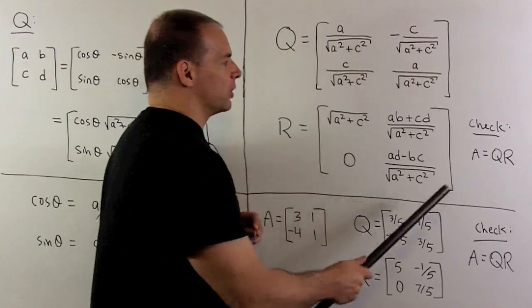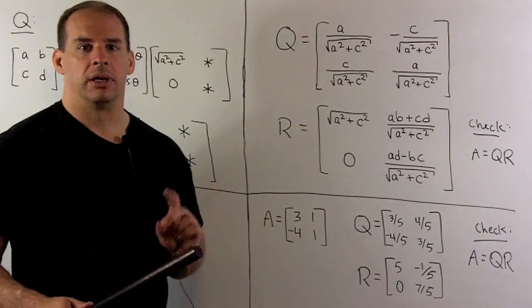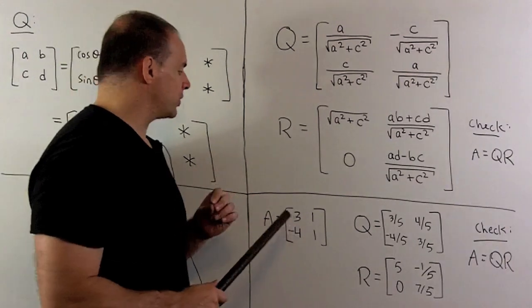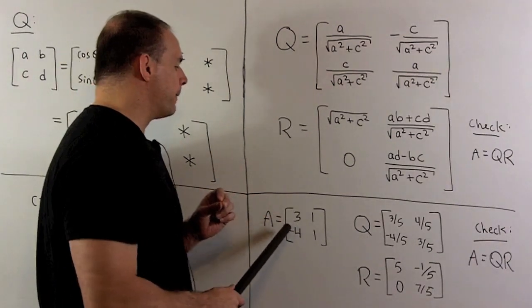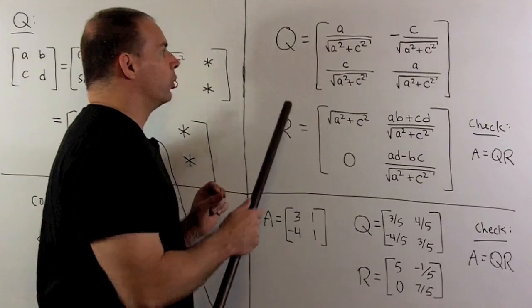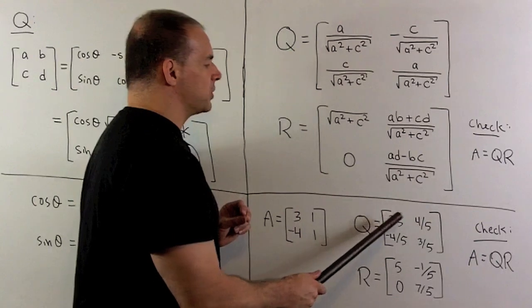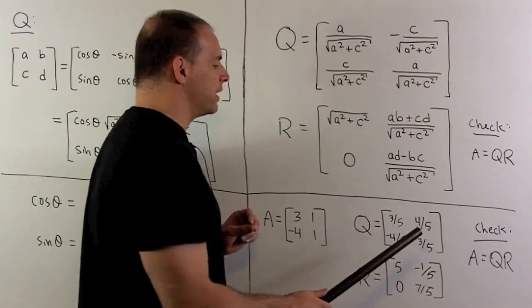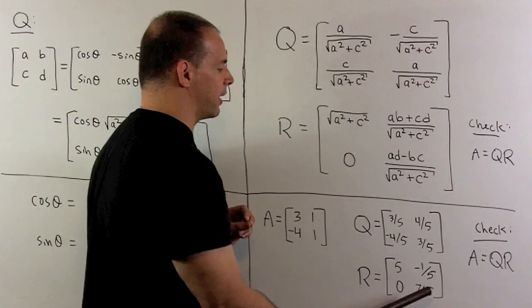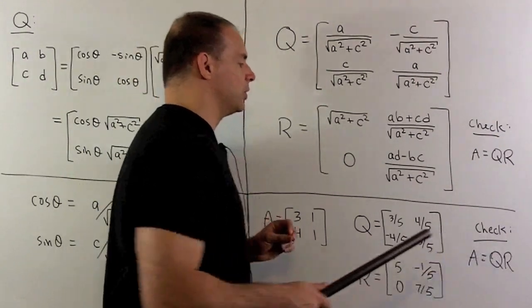Finally, you should check that A equals Q times R. As a numerical example, let A equal [3, 1; -4, 1]. Running these numbers through our formulas, we get Q equals [3/5, 4/5; -4/5, 3/5] and R equals [5, -1/5; 0, 7/5]. You should verify that A equals Q times R.